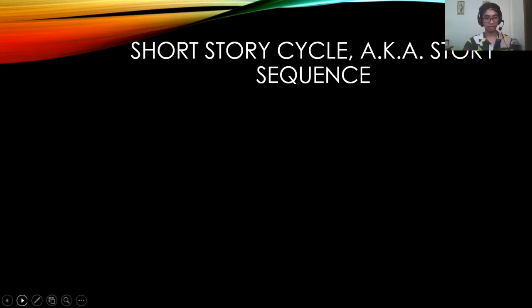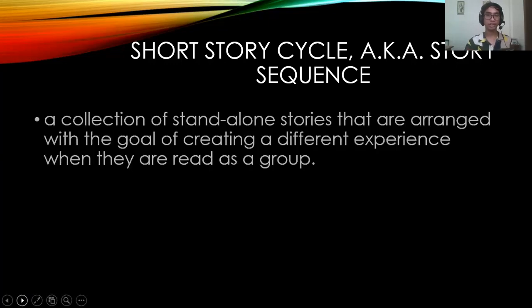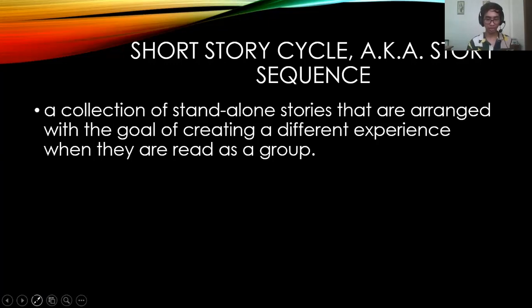A short story cycle, also known as a story sequence, is a collection of standalone stories — meaning each story has a beginning, middle, and conclusion — that are composed and arranged with the goal of creating a different experience when read as a group, as opposed to being read individually. We could think of One Thousand and One Nights and The Canterbury Tales as examples.